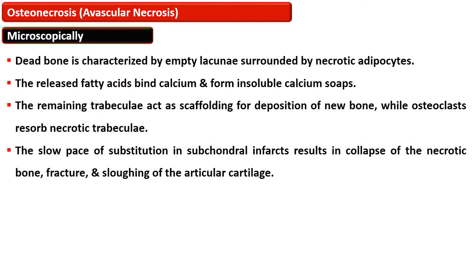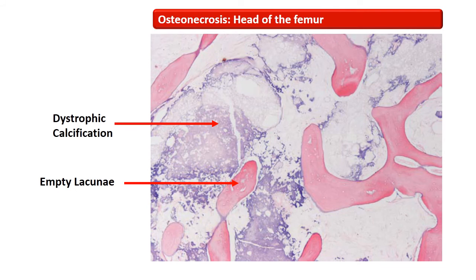The dead bone in avascular necrosis is characterized by empty lacunae surrounded by dead or necrotic osteocytes. Fatty acids released from necrotic marrow bind with calcium to form insoluble calcium soaps, hence dystrophic calcification. The remaining trabeculae act as a scaffold for new bone deposition, while osteoclasts resorb the necrotic trabeculae. This slow process of substitution in subchondral infarcts results in complications such as collapse of the necrotic bone, fracture, and sloughing of the articular cartilage. This photomicrograph shows the characteristic empty lacunae and dystrophic calcification.